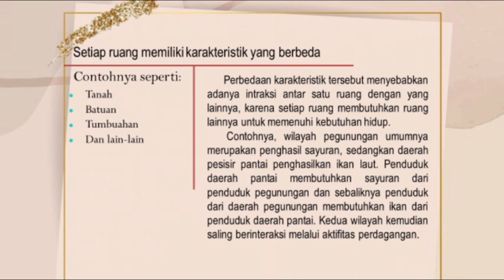Sebagai contoh, wilayah pegunungan umumnya menghasilkan sayuran, sedangkan wilayah pantai menghasilkan ikan laut. Masyarakat wilayah pegunungan membutuhkan masyarakat di wilayah pantai jika ingin mengkonsumsi ikan. Begitupun sebaliknya, masyarakat daerah pantai membutuhkan masyarakat dari daerah pegunungan jika ingin mengkonsumsi sayur-sayuran. Artinya kedua wilayah atau ruang tersebut harus berinteraksi untuk memenuhi kebutuhannya, yang menunjukkan bahwa perbedaan karakteristik memicu interaksi antar ruang.